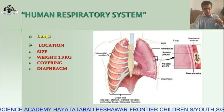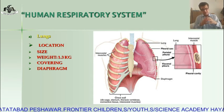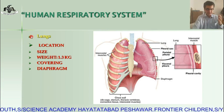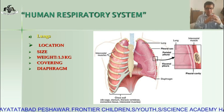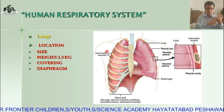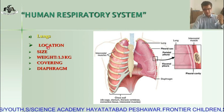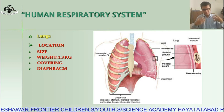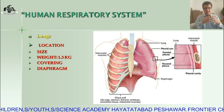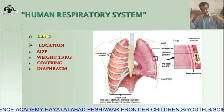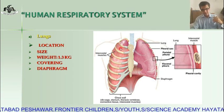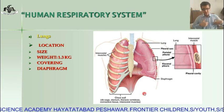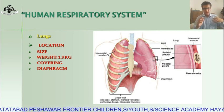Now we come to the lungs, which is the second main component of the human respiratory system. Air passageway parts like bronchioles and alveoli are present inside the lungs. The lungs are located in the thoracic or chest cavity. The right lung is larger in size compared to the left lung because the heart is present on the left side, making the left lung slightly smaller. The average weight of the lungs is almost 1.3 kg.